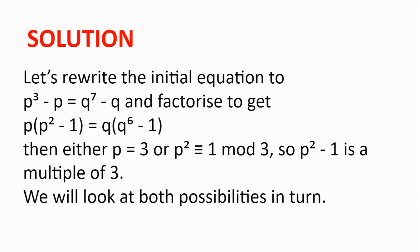p is a multiple of 3 and so 3 because it's prime, or p² ≡ 1 mod 3, so p² - 1 is a multiple of 3. We have two possibilities and we will look at both of them in turn.